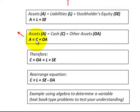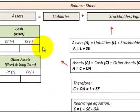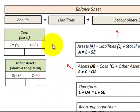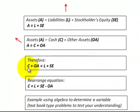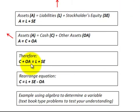Okay, assets equal cash plus other assets. Therefore, let's look here. We can take cash plus the other assets would equal liabilities plus stockholders equity. Cash plus other assets equals liability plus stockholders equity.